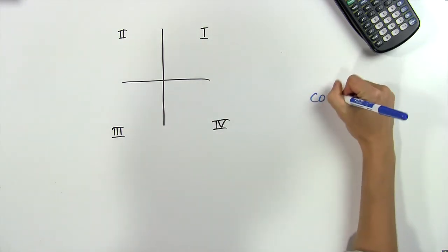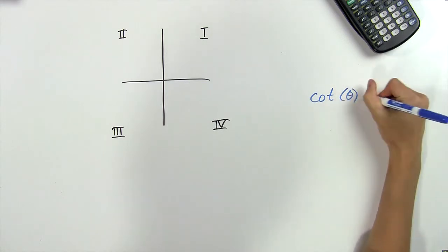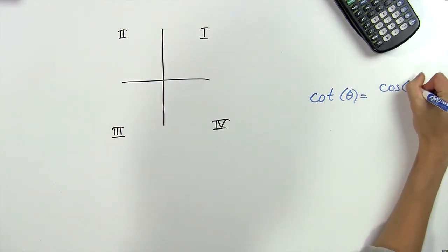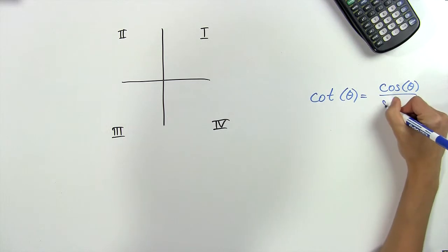Now we know that the cotangent of an angle theta is equal to the cosine of that angle over the sine of that angle.